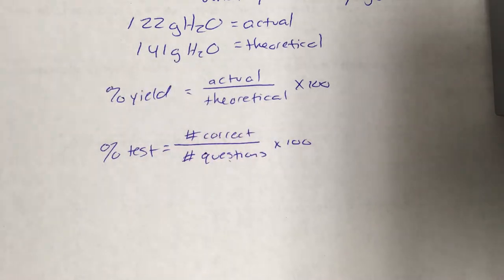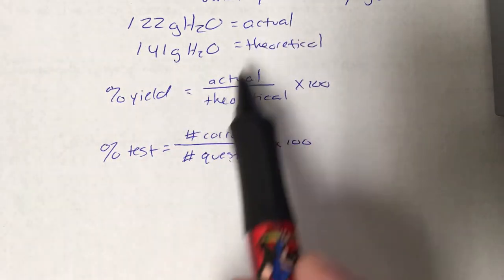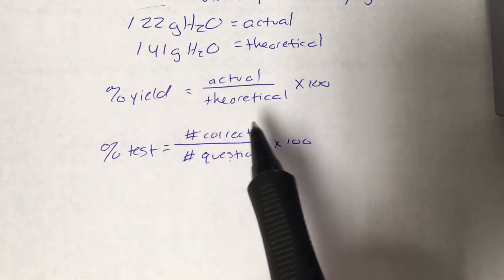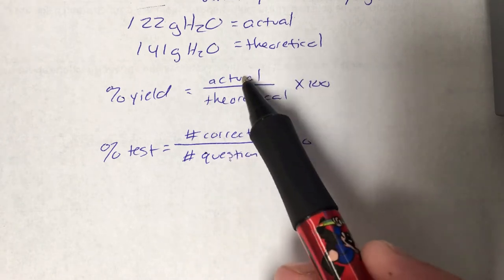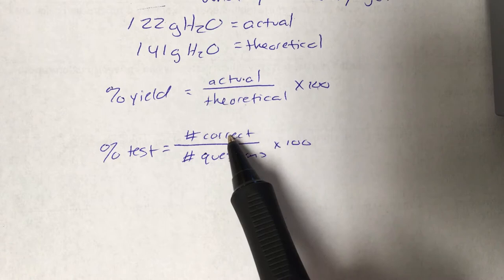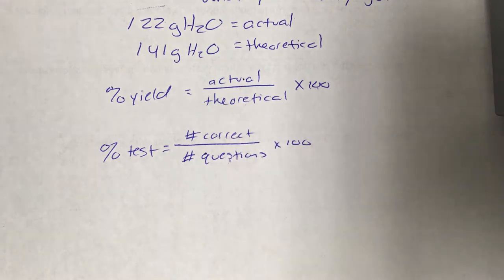So the theoretical, this number here, is the whole. That's the max, that's the total that you can get. This number is a part of that. So when we look at the percent yield equation, it's no different than this one. Part divided by whole times 100.